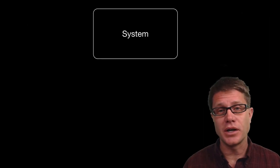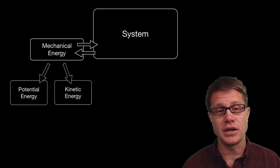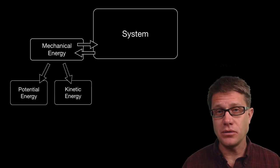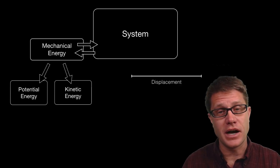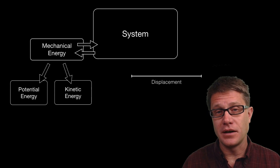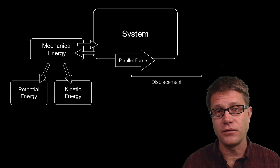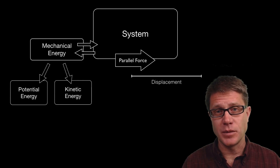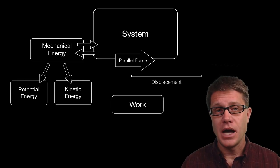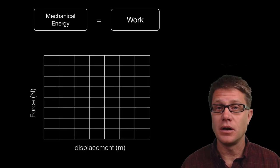In a system we can add or pull out mechanical energy, and that could either be potential due to its position or kinetic energy. As we do that, we have to move that system a certain amount of distance. There has to be a displacement, and that displacement is caused by an unequal parallel force. Work and that mechanical energy that is added are going to be equivalent.